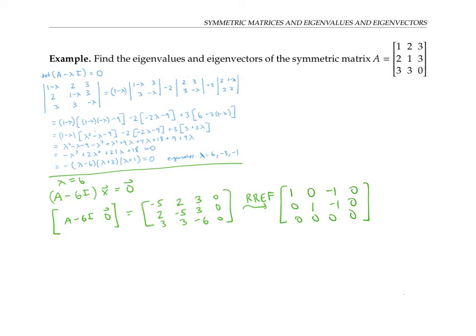Let's set x three as a free variable. We have x one minus x three equals zero and x two minus x three equals zero. So the eigenvectors are of the form x three, x three, x three. In other words, they're of the form x three times the eigenvector (1,1,1), and I can just use (1,1,1) as an eigenvector.